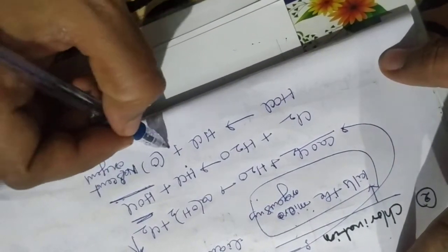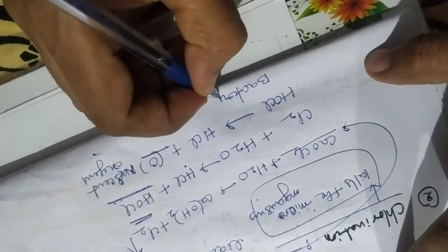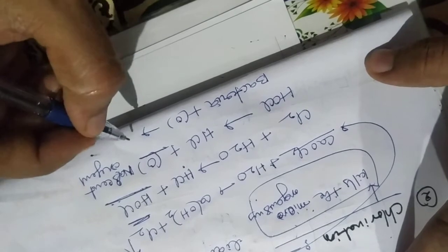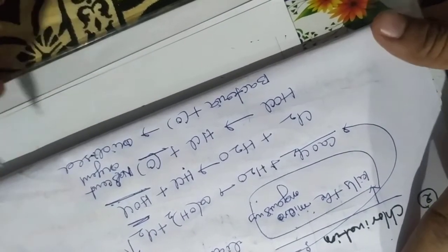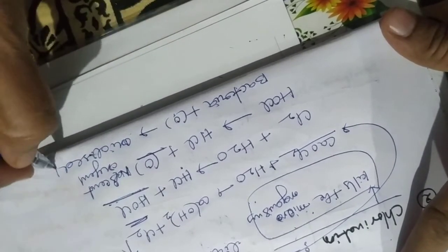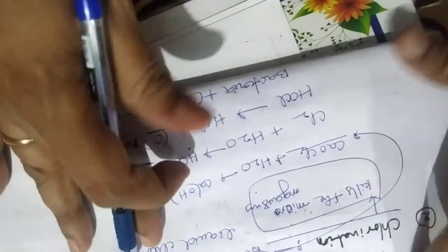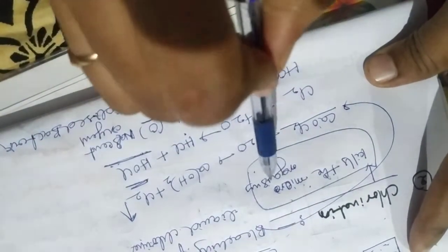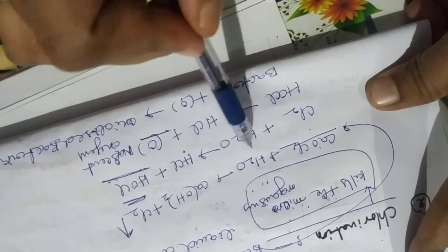The hypochlorous acid dissociates into HCl and releases nascent oxygen. This nascent oxygen is very, very active. It reacts with the bacteria — the bacteria is oxidized, meaning bacteria is killed by this nascent oxygen. So these reactions are involved in chlorination, which mainly kills microorganisms like bacteria by oxidizing them using nascent oxygen released from the bleaching powder.